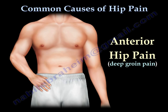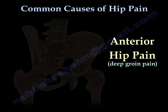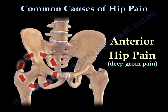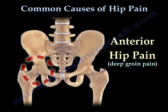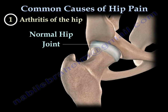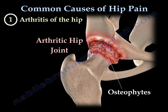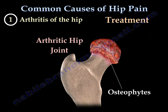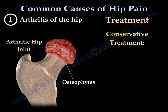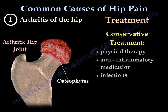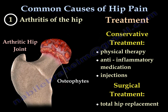Anterior hip pain is usually deep in the groin. It can result from arthritis of the hip. The treatment is usually conservative with therapy, medication, and injection. Surgical treatment in late cases is by total hip replacement.